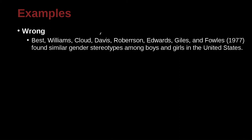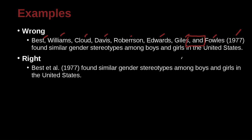Best, Williams, Cloud, Davis, Roberson, Edwards, Guile, and Fowles (1977) found similar gender stereotypes among boys and girls in the United States. That's eight authors — one, two, three, four, five, six, seven, eight. It looks good that there's a comma and AND before the last author, and the year is there. But the problem is there are too many authors. For three or more you can use et al., but normally you use the actual names the first time. However, if there are seven or more authors, we go ahead and use et al. even the very first time — and that's what should be done here.